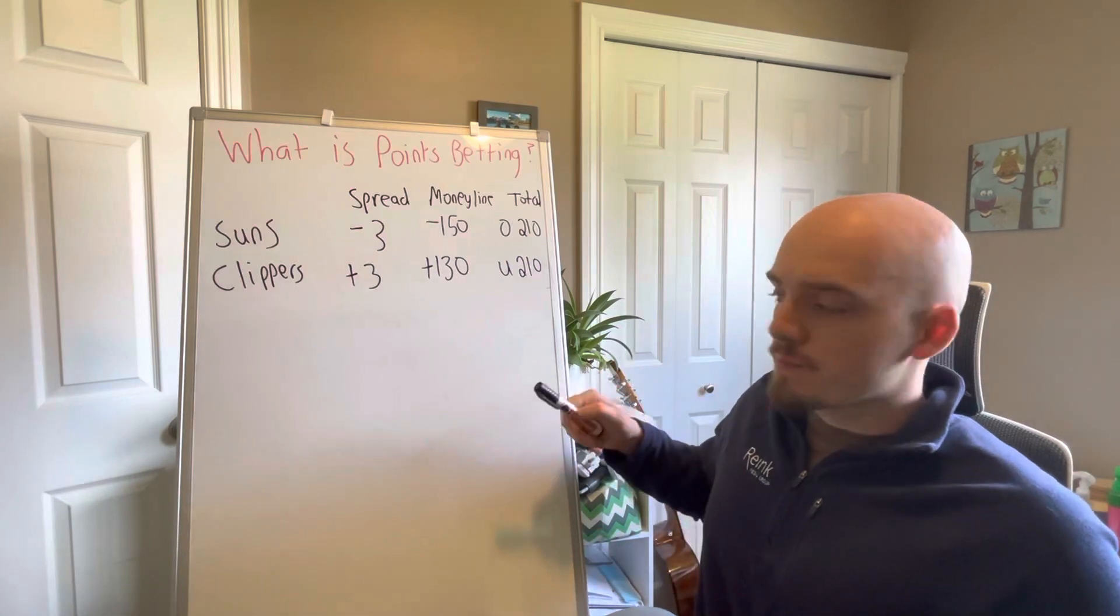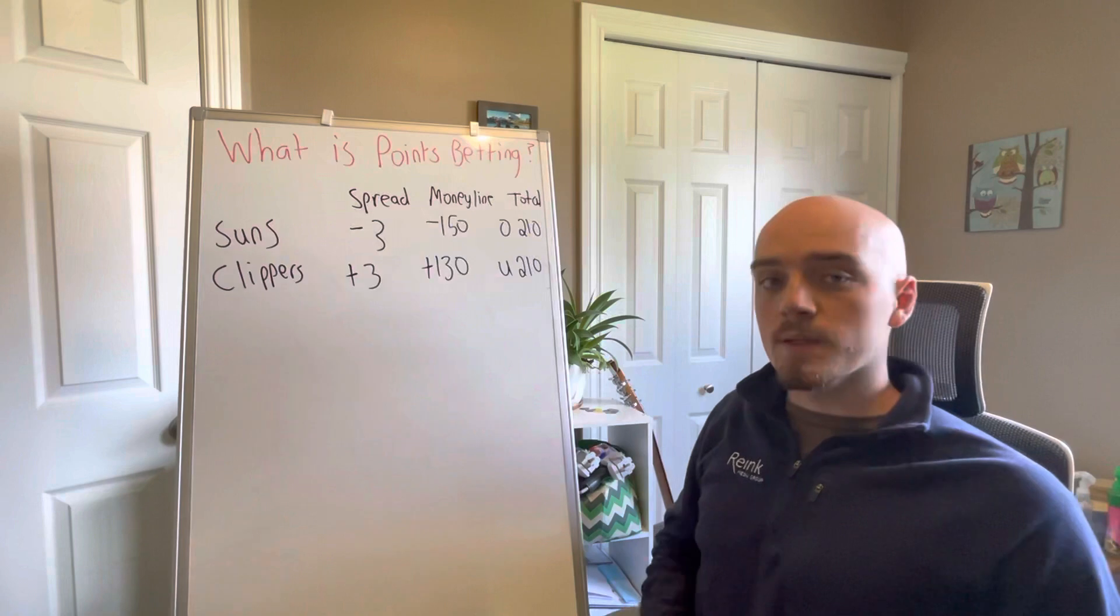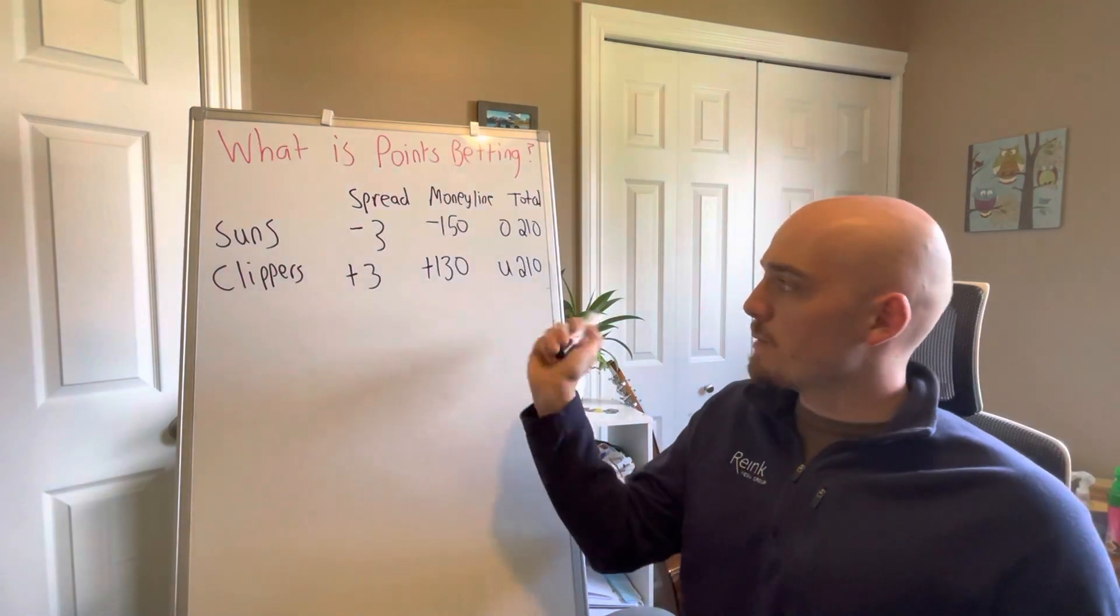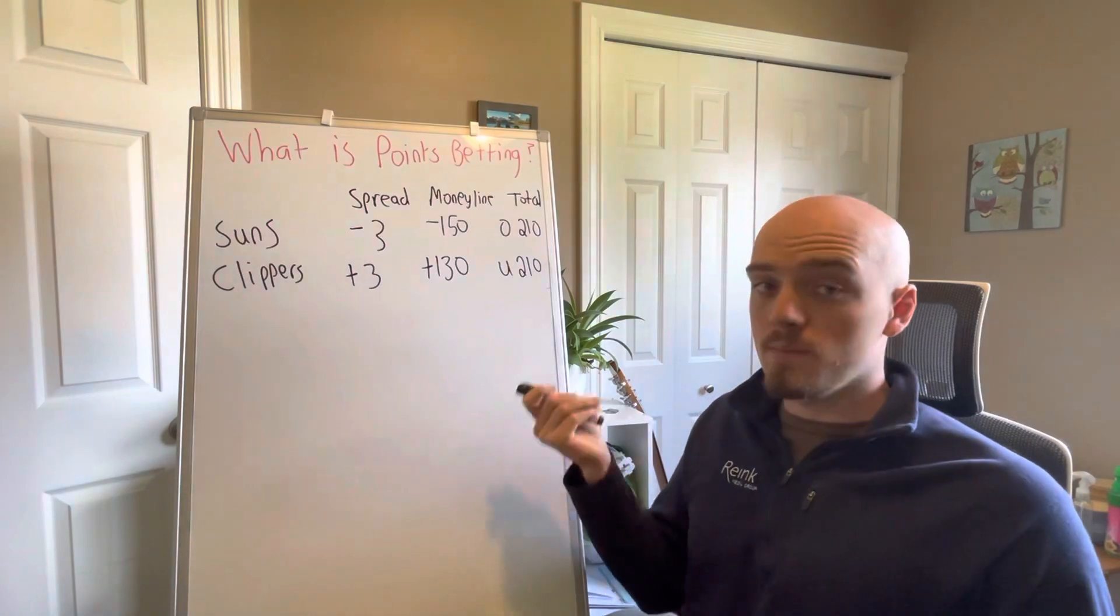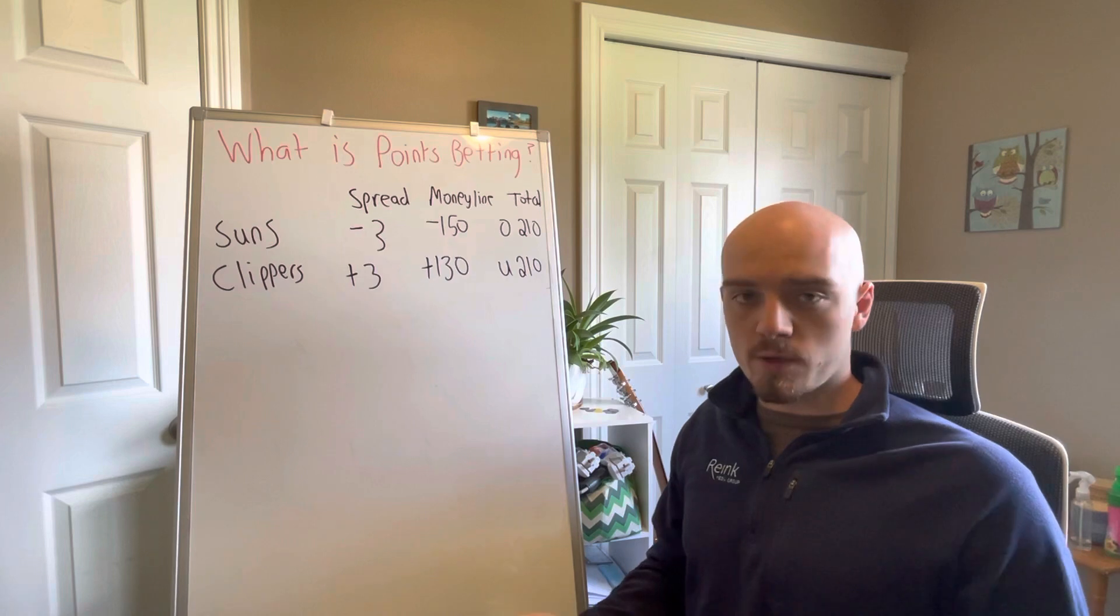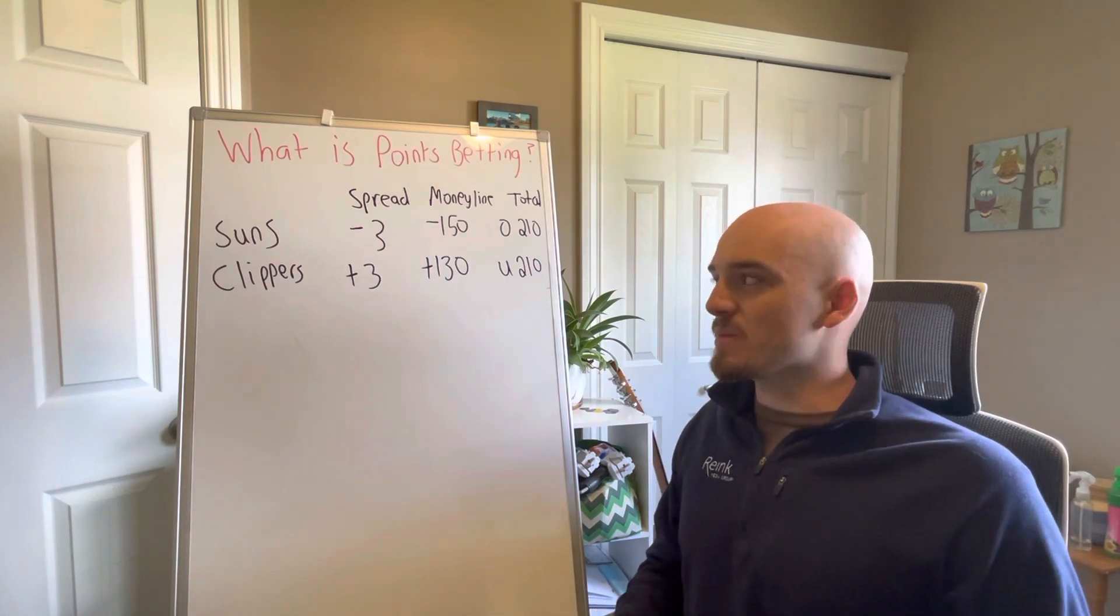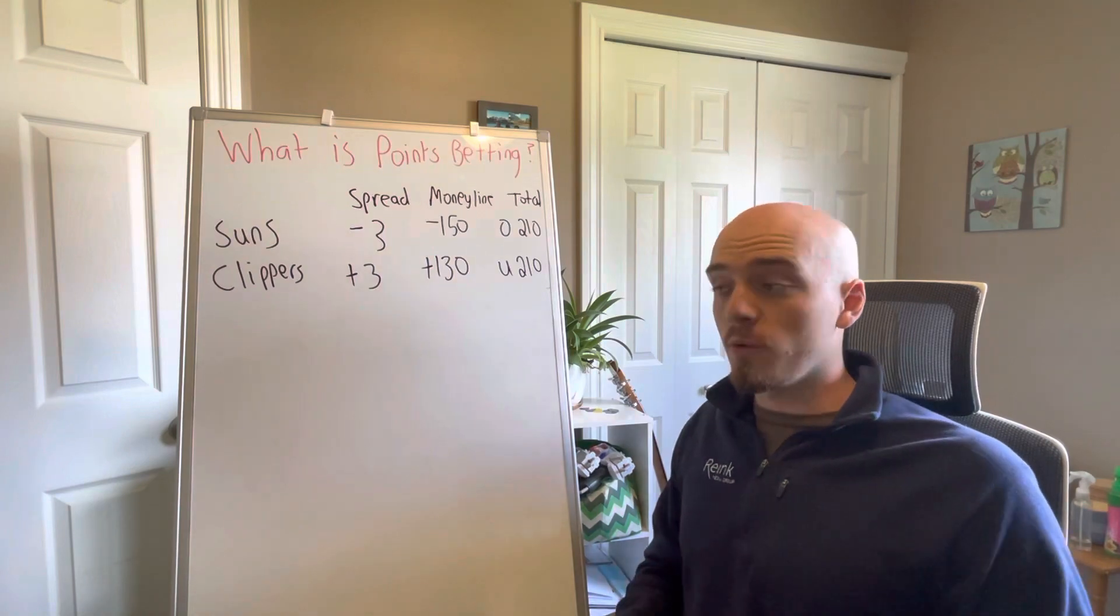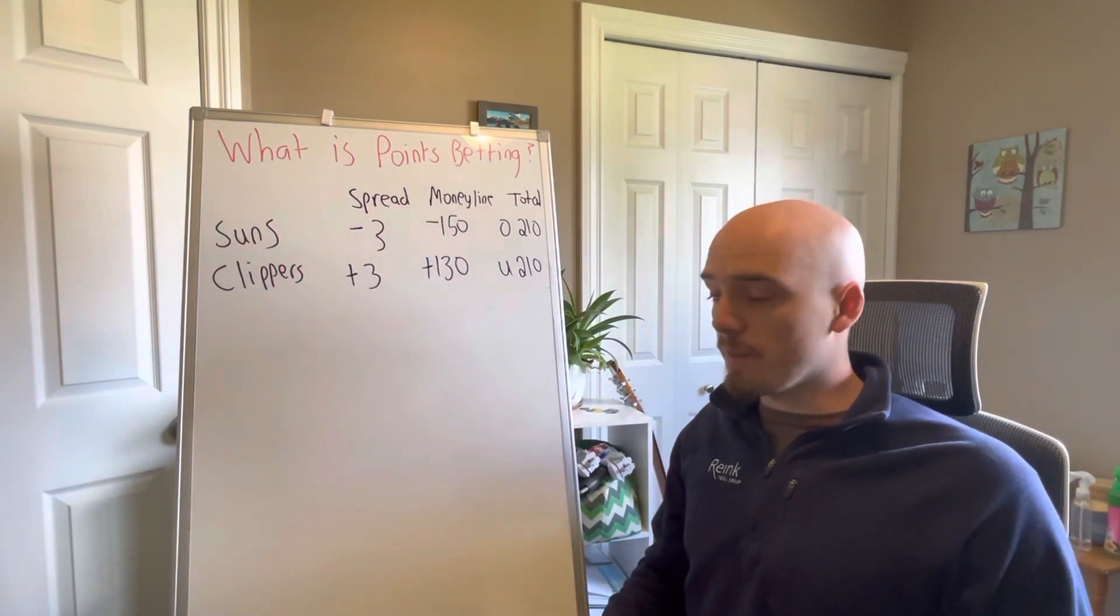When you log into any sports betting app, you're typically going to see spread, Moneyline, and total bets. These are your most common bet types and they're essentially fixed payout bets. What that means is if I'm betting on the Suns minus three, I'm typically going to get minus 110 odds. So $10 bet's going to pay out nine bucks. And it doesn't matter if the Suns win by five or 50, as long as I cover that three point spread, then I'm going to win my bet.